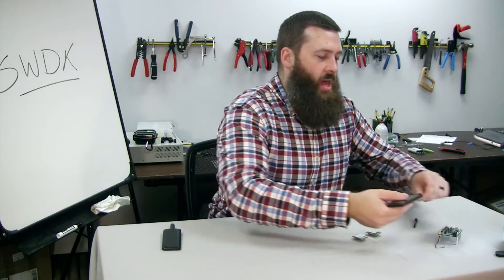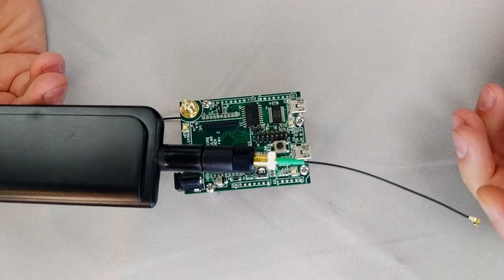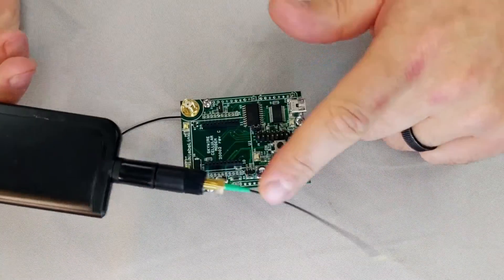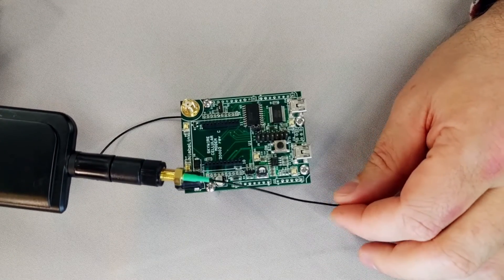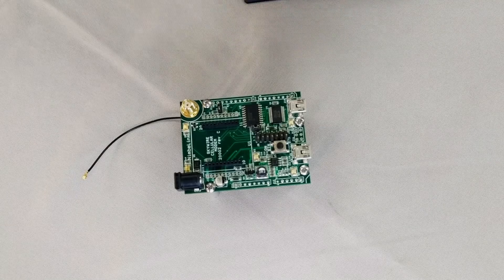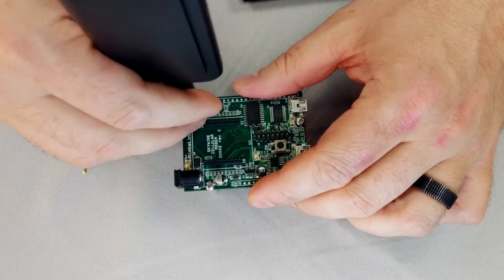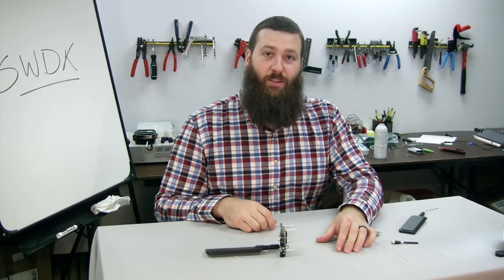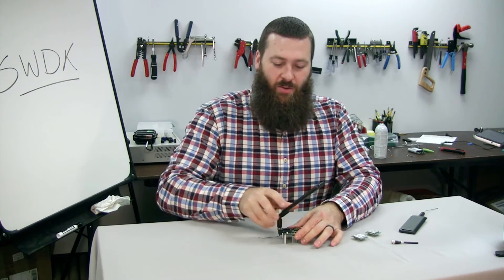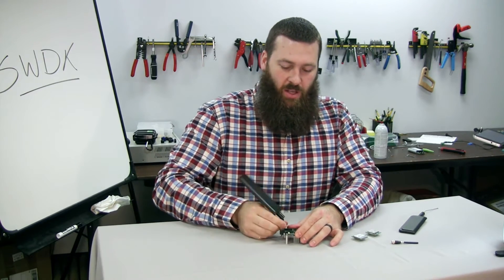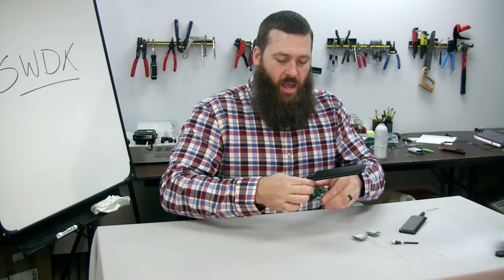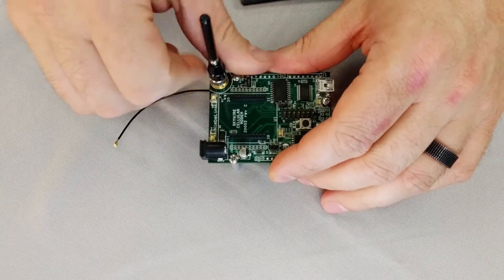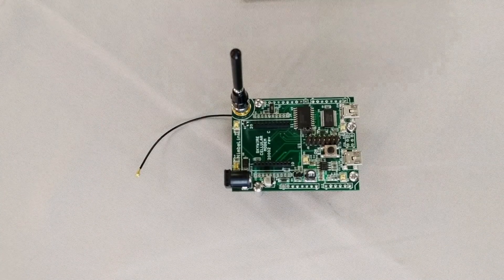The Skywire Development Kit has only one antenna connection, so you may need a second antenna for LTE devices. With a little adapter cable, you can connect any other type of antenna. The included antennas can be a little unwieldy and tend to fall over, but you can bend them back, or use a smaller antenna like this one from Taoglas.